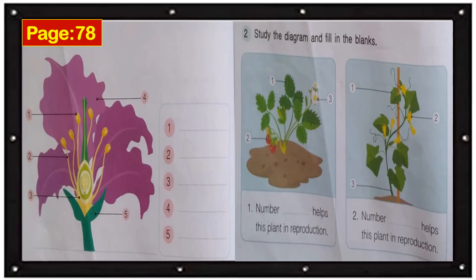On page 78, all you have to do is name the parts of the flower. For example, number 1 — what part of the flower is number 1? So you need to write the answer for number 1. In number 2, study the diagram and fill in the blanks: number blank helps this plant in reproduction. What do you think helps the plant in reproduction? Is it number 1, the leaves? Number 2, fruits? Or number 3, flowers? So what number?